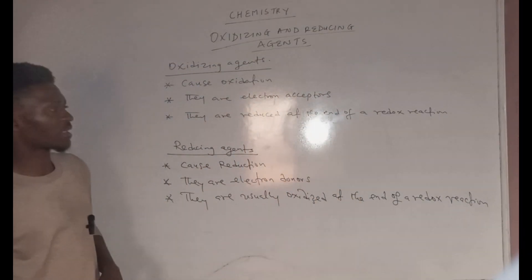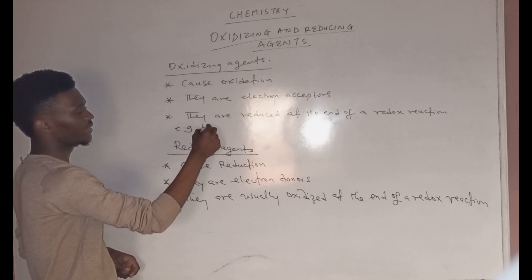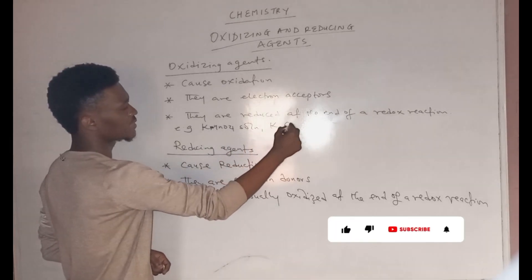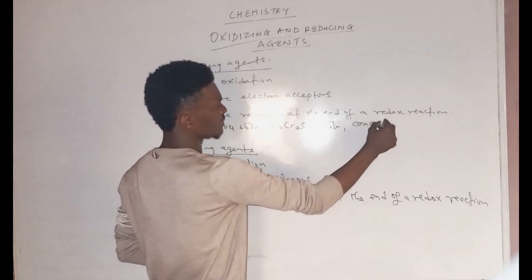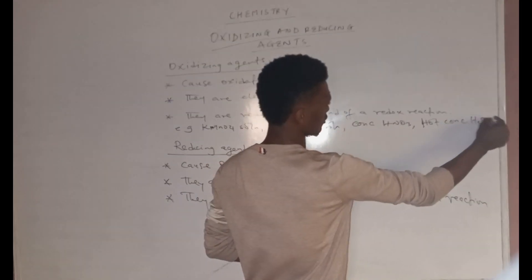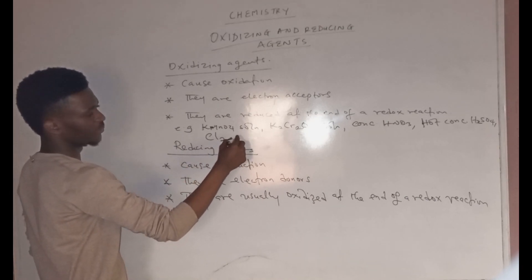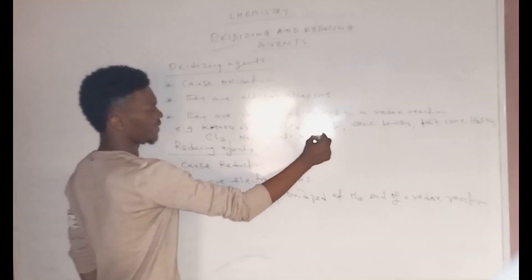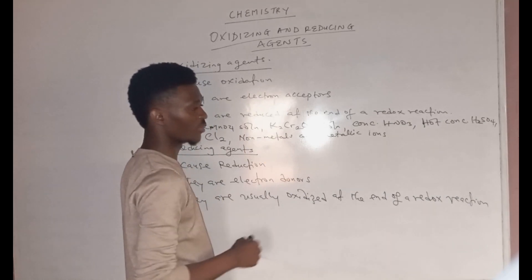Looking at the classical examples of oxidizing agents, we have KMnO4 solution, K2Cr2O7 solution, concentrated nitric acid, hot concentrated sulfuric acid (H2SO4), chlorine, non-metals, and metallic ions, which also function as oxidizing agents.